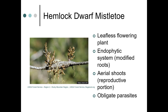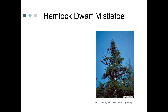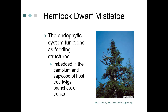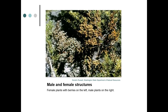Now, mistletoe — specifically hemlock dwarf mistletoe. This is a leafless flowering plant with an endophytic system, meaning it gets inside the plant. It has modified roots called aerial shoots, which are the reproductive portion, and it is an obligate parasite, meaning it needs to parasitize something to survive. The endophytic portions function as feeding structures, embedded in the cambium or sapwood of the host tree's twigs, branches, or trunks. The external portions are the male and female structures — on the left we have the fruit of female plants, and on the right we have the male plants.